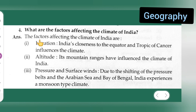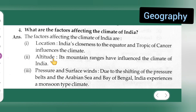The factors affecting the climate of India are — there are three points. First is location: India's closeness to the equator and Tropic of Cancer influences the climate. Second is altitude: its mountain ranges have influenced the climate of India. Third is pressure and surface winds: due to the shifting of the pressure belts and the Arabian Sea and Bay of Bengal, India experiences a monsoon-type climate.